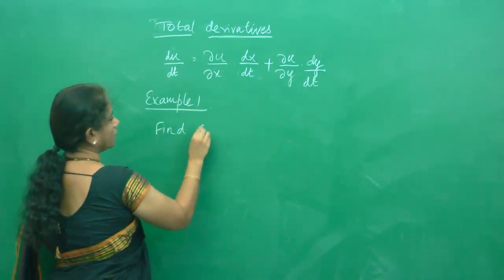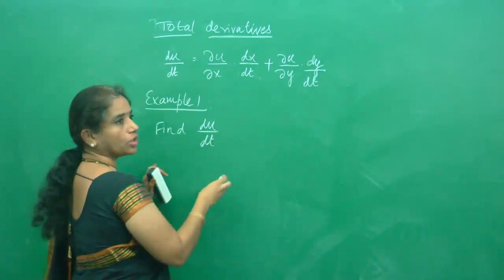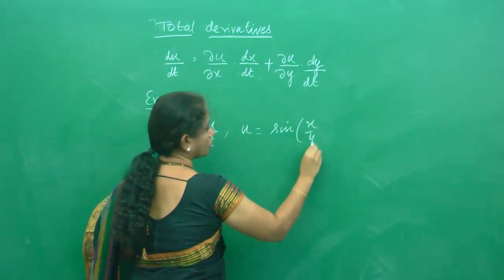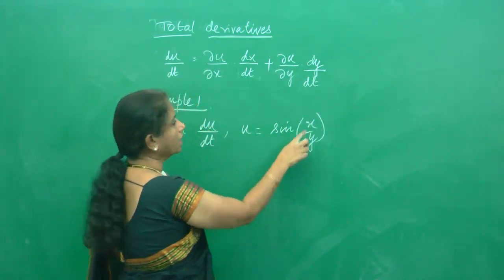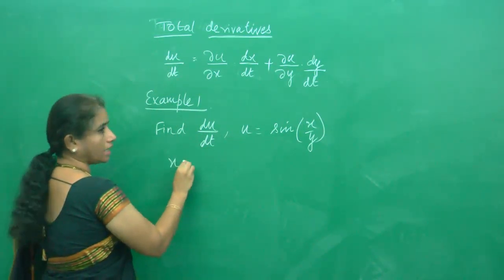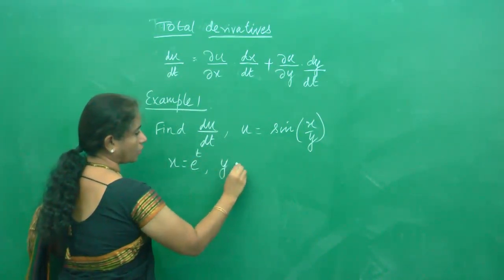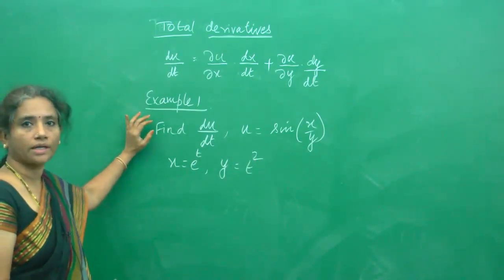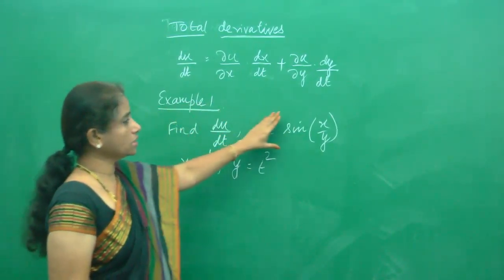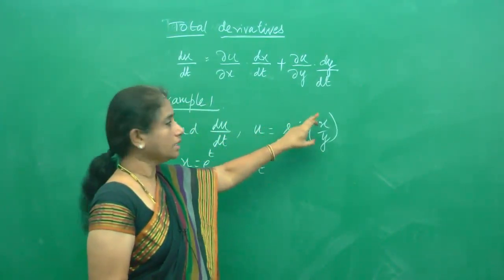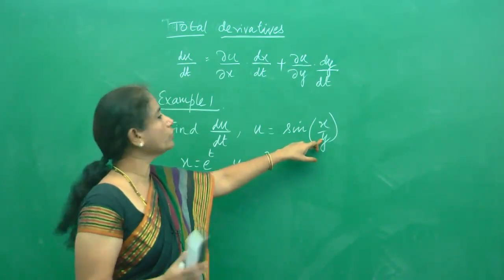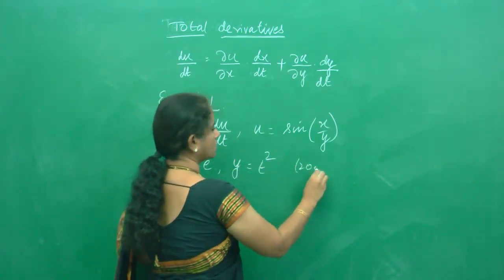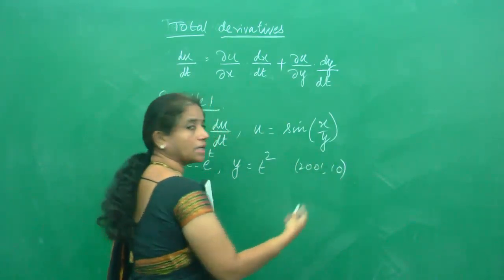We are going to find du/dt. We are given u = sin(x/y), where u is a function of x and y. But x and y are defined as: x = e^t and y = t². This is another type of total derivative where two variables come into play. This question has appeared in 2001 as well as 2010 in past papers.